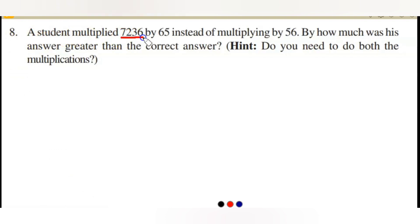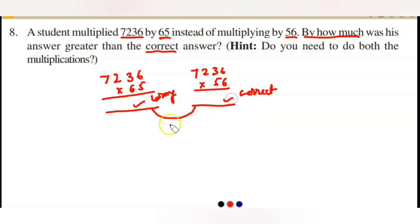A student multiplied 7,236 by 65 instead of multiplying it by 56. Instead of multiplying by 56, he done by mistake with 65. By how much was his answer greater than the correct answer? You will get a wrong answer if you multiply 7,236 with 65, because he has to multiply 7,236 by 56. So instead of multiplying with 56, he multiplied with 65. This is the wrong answer and this is the correct answer. He is asking what is the difference between these two answers?